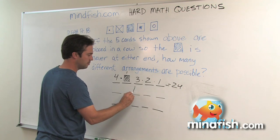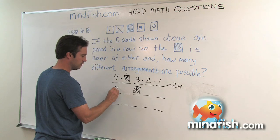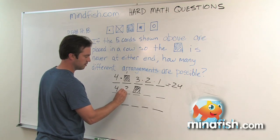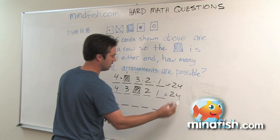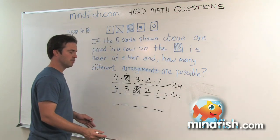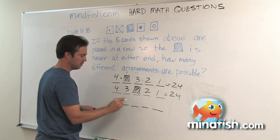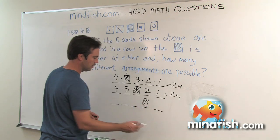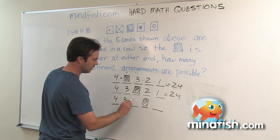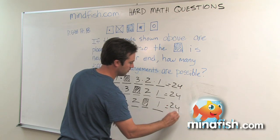The colored box could also go in the middle position. Again, there are four choices for the first spot, three for the next, two for the next, and one for the last — giving 24 different ways to arrange the boxes when the colored box is in the middle. And lastly, the colored box can go in the fourth position. Again, it's four, three, two, one — 24.